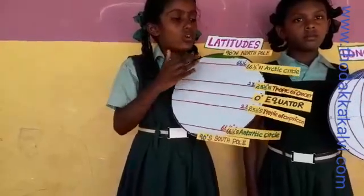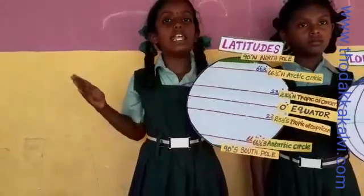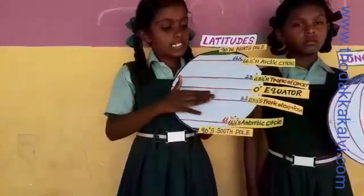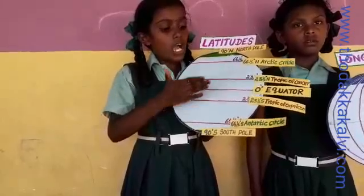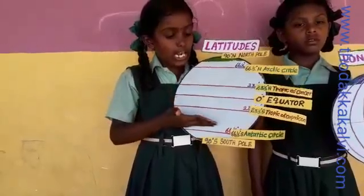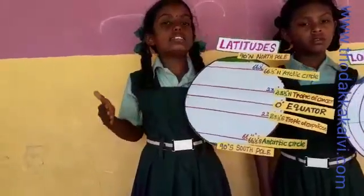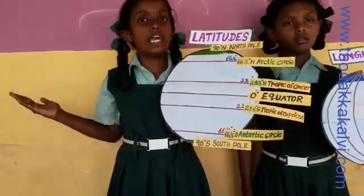The northern part of the earth above the equator is known as the northern hemisphere. The southern part of the earth below the equator is known as the southern hemisphere.